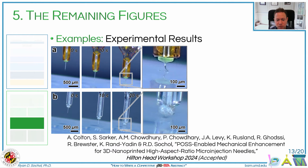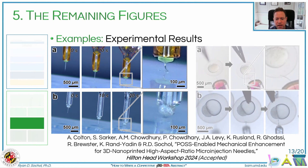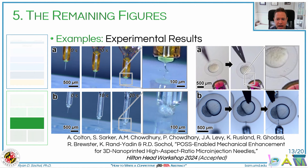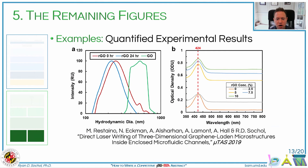In terms of experimental results, these are examples from work to be presented at the Hilton Head workshop in June. Here the results are divided so that we first present our in vitro results and then our in vivo results. Lastly, there are usually quantified experimental results. In most cases, experiments should be designed to generate data that can be quantified and analyzed.